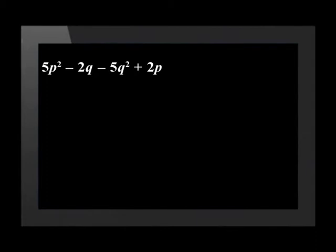Before we group it, we will need to rearrange it. We have to be careful to move the sign of the term with the term. Rewritten, the expression reads 5p squared minus 5q squared minus 2q plus 2p.